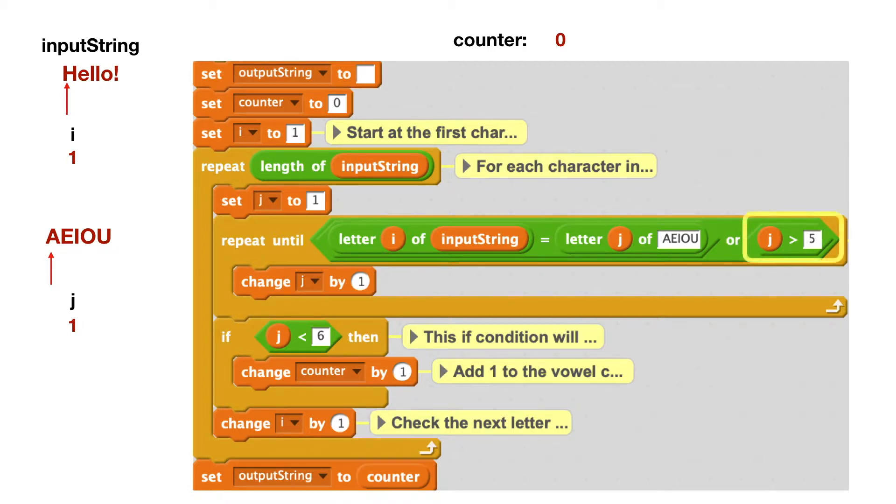And then we get to this part of the OR statement to the right. So is J bigger than five? Well, J is one. So that's also false. So in an OR statement, a false or false will yield a false. And think about what we're doing. We're repeating until something is true. But it's false. So that means we're not going to end our repeat loop. We're going to go here to this change J by one. And what that does, it's going to add one to our J.